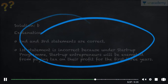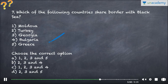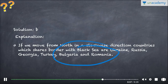Question seven: Which of the following countries share a border with the Black Sea? The answer is two, three, and four — Turkey, Georgia, and Bulgaria. Moving clockwise from the north, the countries sharing a border with the Black Sea are Ukraine, Russia, Georgia, Turkey, Bulgaria, and Romania. Open the atlas to see their exact locations.